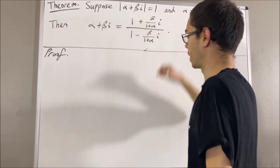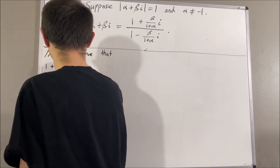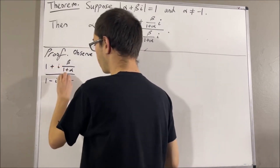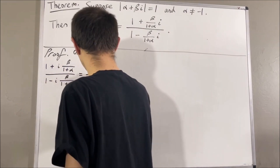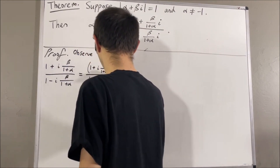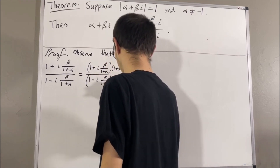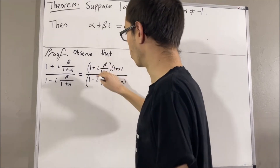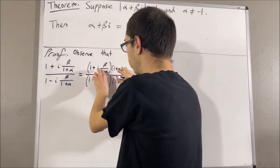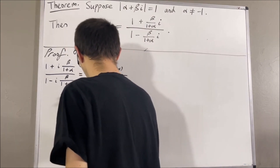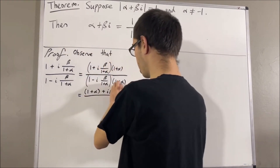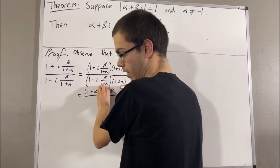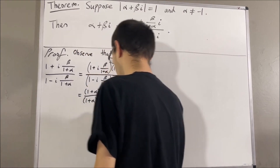So, we'll start out by writing the right-hand side. Let's start out by multiplying both the numerator and denominator by 1 plus alpha to get rid of the fractions. Now, in the numerator, if we distribute the 1 plus alpha across, we're going to get 1 plus alpha plus i beta. And, in the denominator, if we distribute the 1 plus alpha across, we're going to get 1 plus alpha minus i beta. So, we get this.